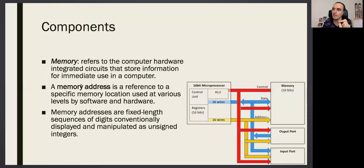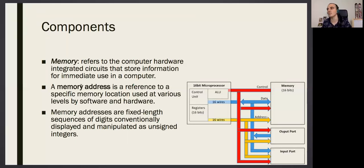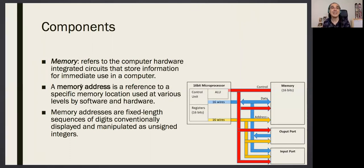Each room in memory has a number, like a hotel room number. We call that number the memory address. So memory involves two types of information: the hotel room number (the address) and what is inside the room (the data). Both are binary numbers. Memory addresses are fixed-length sequences — for example, eight bits, meaning eight zeros and ones together form the address.